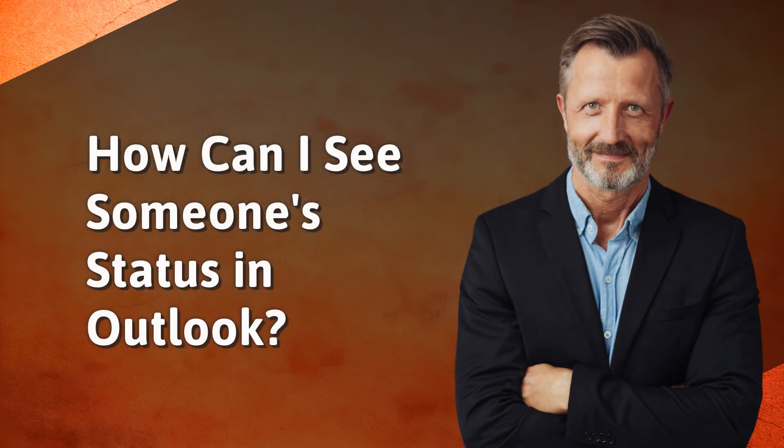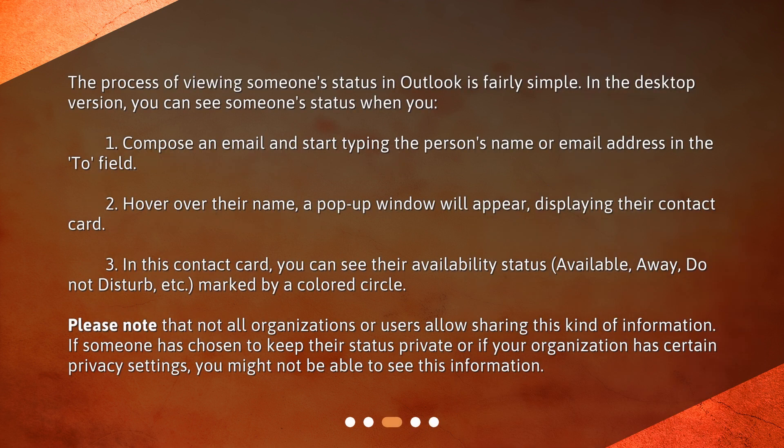How can I see someone's status in Outlook? The process of viewing someone's status in Outlook is fairly simple. In the desktop version, you can see someone's status when you: 1. Compose an email and start typing the person's name or email address in the To field. 2. Hover over their name — a pop-up window will appear displaying their contact card. 3. In this contact card, you can see their availability status — available, away, do not disturb, etc. — marked by a colored circle. Please note that not all organizations or users allow sharing this kind of information. If someone has chosen to keep their status private, or if your organization has certain privacy settings, you might not be able to see this information.